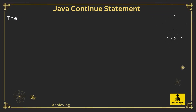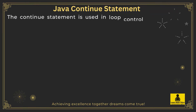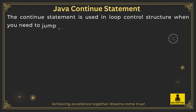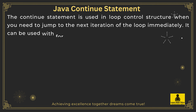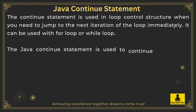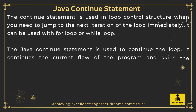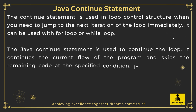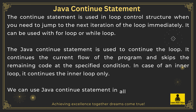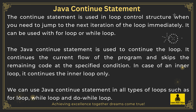The Java Continue Statement is used in loop control structure when you need to jump to the next iteration of the loop immediately. It can be used with a for loop or while loop. The Java Continue Statement is used to continue the loop.